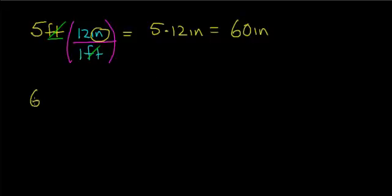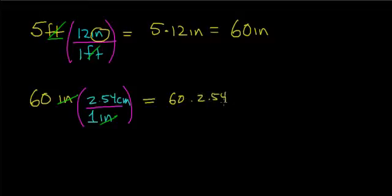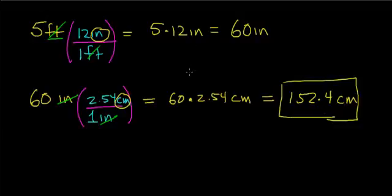The next step is to go from 60 inches to centimeters, since I know a direct relationship between those units. I put 1 inch on the bottom and 2.54 centimeters on top. My units of inches cancel out, leaving 60 times 2.54 centimeters, which equals 152.4 centimeters. I always have to include my units — and I'll circle that as my final answer.